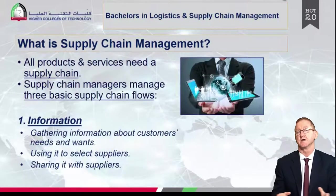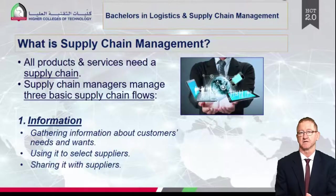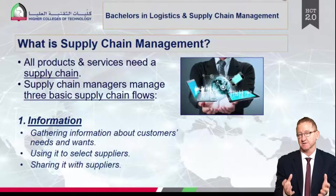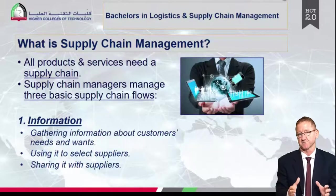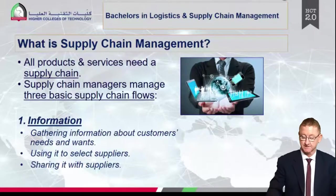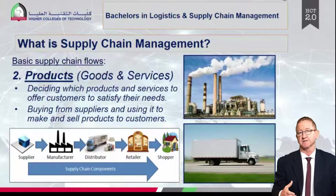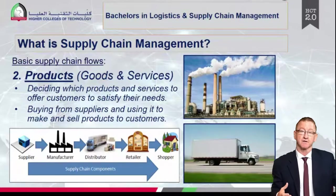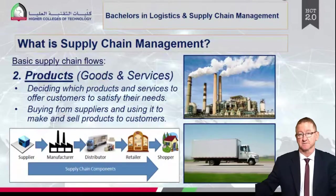Supply chains are managed across three supply chain flows: information, products and services, and finance or money. Information is very important — a manufacturer needs to know what customers want through market research, and uses that information to find the right supplier. The product flow generally flows from the supplier towards the customer, while a retail company will buy from a supplier who provides the finished product ready to sell to the final consumer.